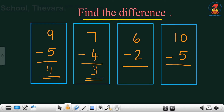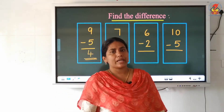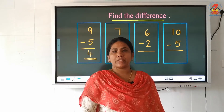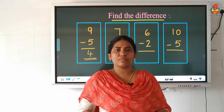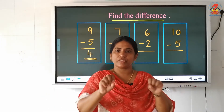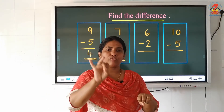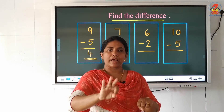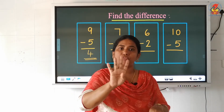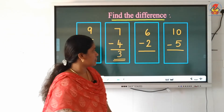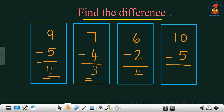Look at the next question: 6 minus 2. Which is the small number? 2 is the small number. Start counting after the small number. After 2: 3, 4, 5, 6. How many fingers did I raise? 4 fingers. So 4 is our answer.